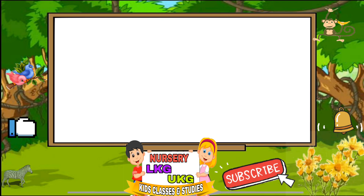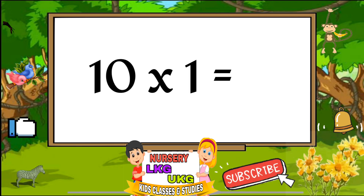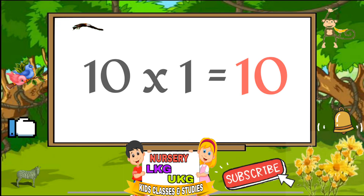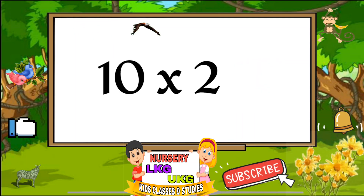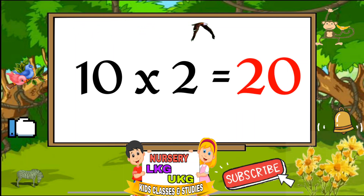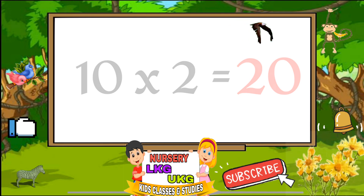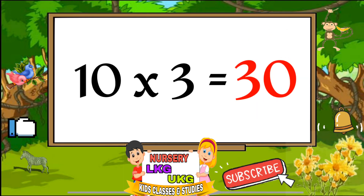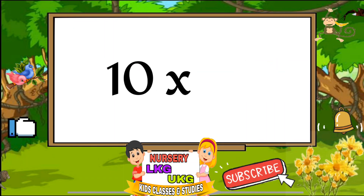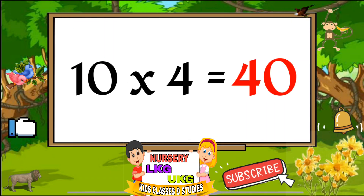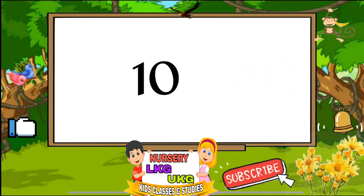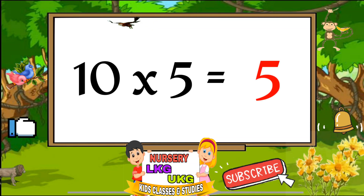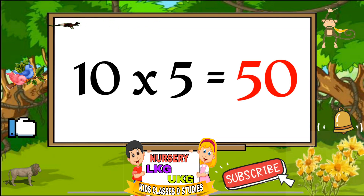Ten ones are ten. Ten twos are twenty. Ten threes are thirty. Ten fours are forty. Ten fives are fifty.